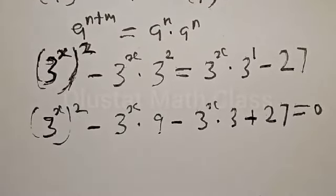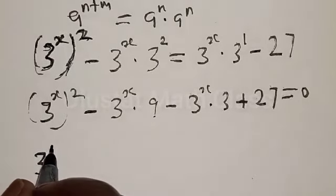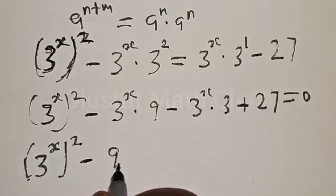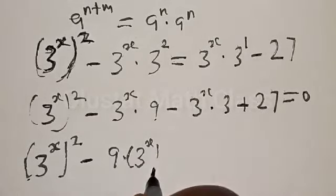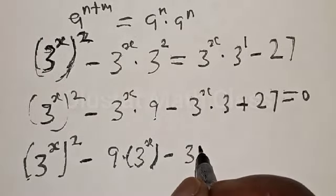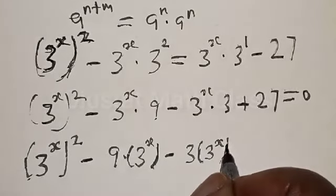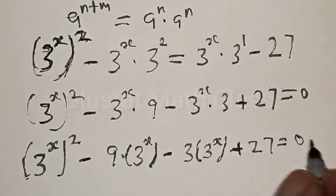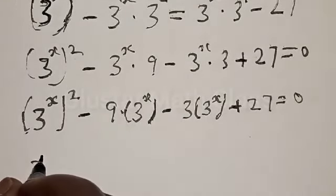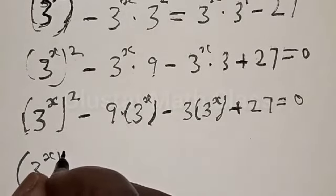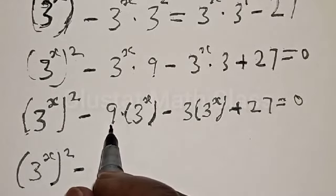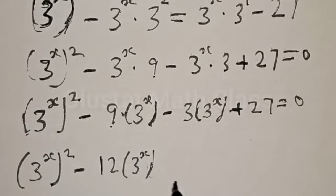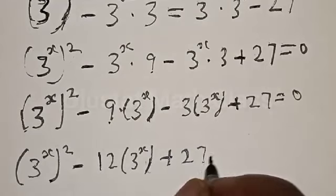So we have 3 raised to the power x all squared, minus 9 multiplied by 3 raised to the power x, minus 3 multiplied by 3 raised to the power x, plus 27 equal to 0. Then we have 3 raised to the power x all squared, minus 9 minus 3 — that is minus 12 — multiplied by 3 raised to the power x, plus 27 equal to 0.